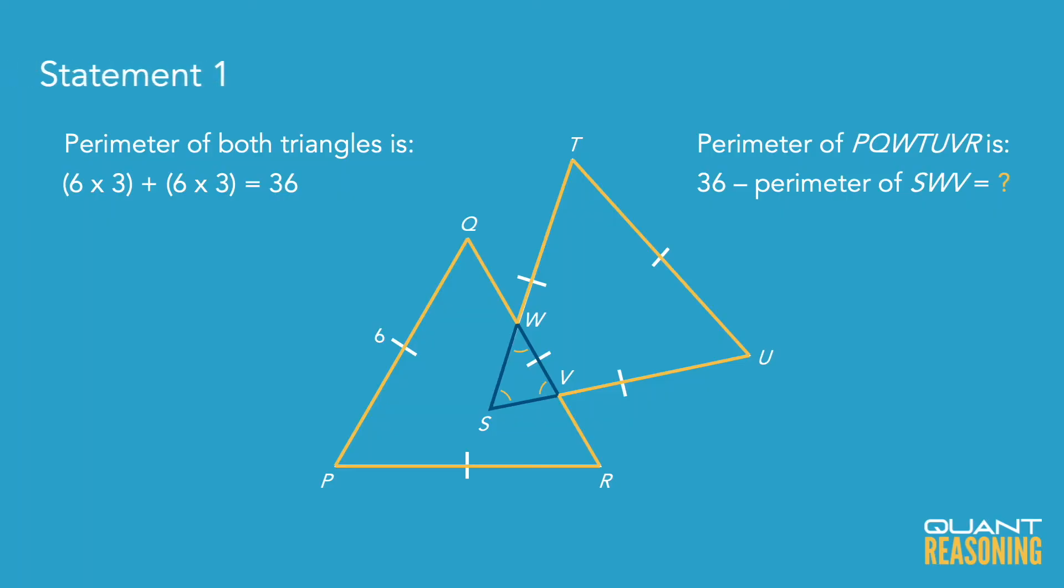So that's probably a good way to rephrase the question before we even go into the statements. Now statement one gives us exactly that perimeter of the overlapping triangle that we were hoping for. So that's sufficient and we can go ahead and eliminate BCE.